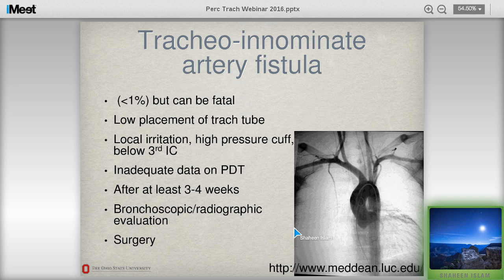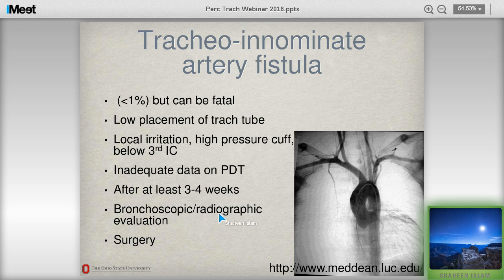This shows the arch of the aorta. The first branch is the brachiocephalic or innominate artery, which is right against the trachea. Management includes radiographic evaluation if there is time, but surgery is the best option. The innominate artery sits in front of the trachea against approximately the 6th or 7th cartilages. If the anterior wall of the tracheostomy tube is placed too low, it can erode into the innominate artery over time.